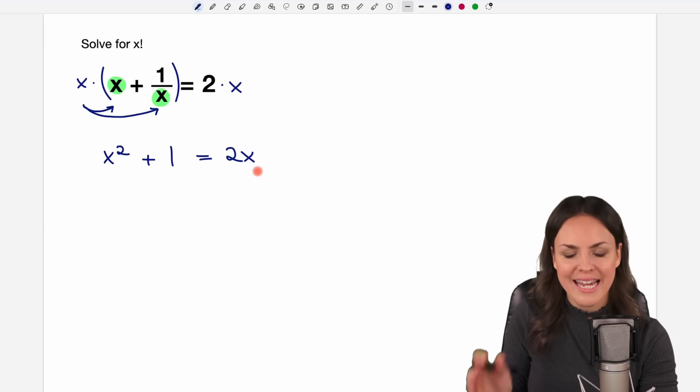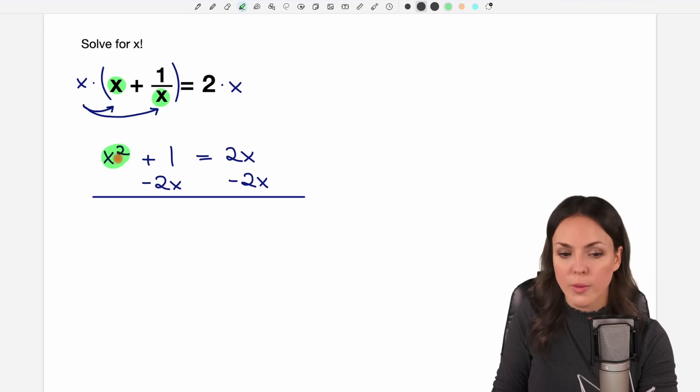For that we need everything on one side. So we take the 2x and put it on the left side by subtracting 2x on both sides and then we get. First we take care of the x squared part, so it's just x squared.